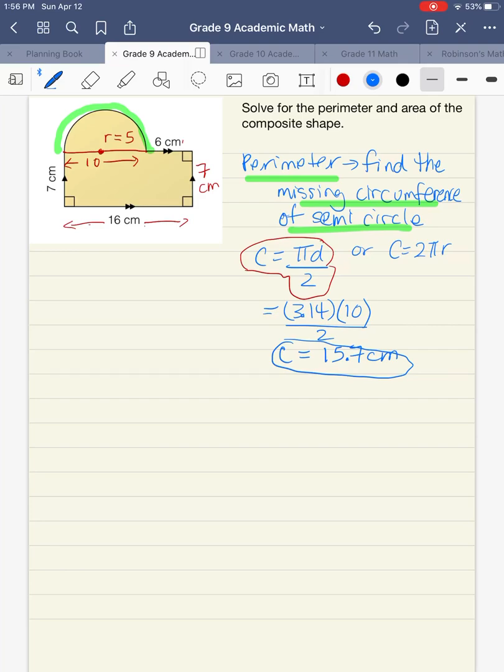Okay, so we found that. And so now we can calculate our total perimeter. So the total perimeter is going to be equal to 7 plus 16 plus 7 plus 6 plus 15.7. And that is going to give us 51.7 centimeters.